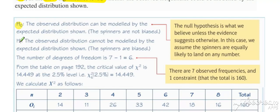Null and alternative, always set up the same. Observed do represent or can be modeled by the expected, and observed cannot be modeled by the expected. Or there is little difference between the observed and the expected, or there is significant difference between the observed and the expected.